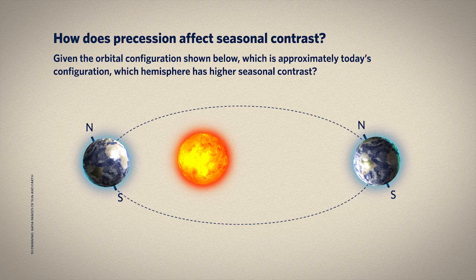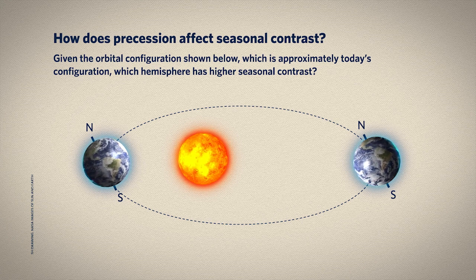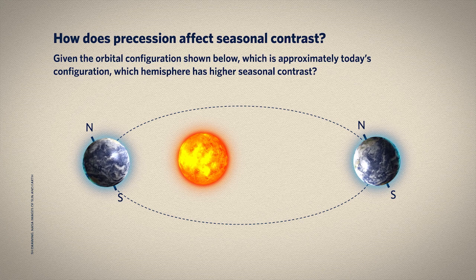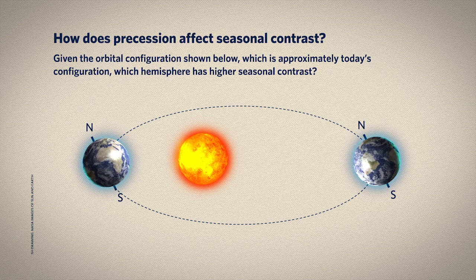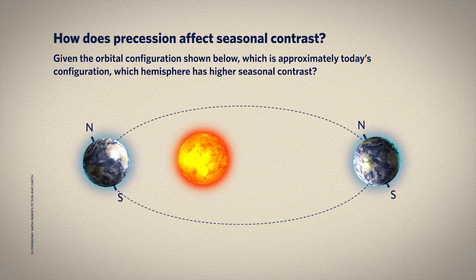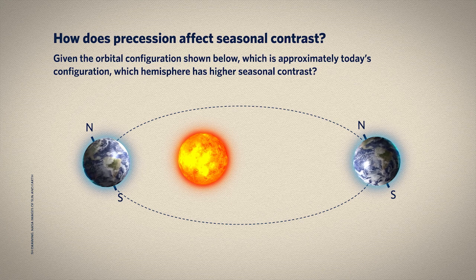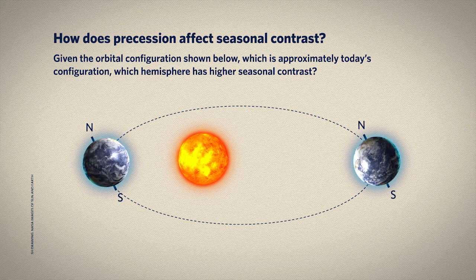This next question is about precession combined with eccentricity. The diagram shows a highly exaggerated eccentric orbit, just so we can see it better. The Earth passes closest to the Sun on the left side of the diagram, and passes farthest from the Sun six months later on the right side. Figure out which hemisphere is having which seasons at the two points on the annual orbit shown, then compare the seasonal contrast in the northern versus the southern hemisphere. In this diagram, northern hemisphere winter and southern hemisphere summer are happening at the position on the left, when Earth is closest to the Sun. You can tell the seasons by the tilt. At the position on the right, we have northern hemisphere summer and southern hemisphere winter — at the farthest point on the orbit from the Sun.